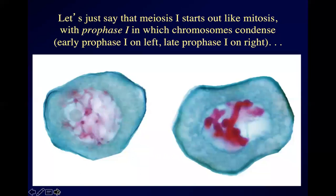Meiosis one consists of prophase one, metaphase one, anaphase one, and telophase one. Meiosis two consists of prophase two, metaphase two, anaphase two, and telophase two. I'm not going to go over every one of those stages in agonizing detail.